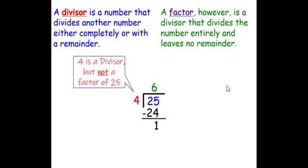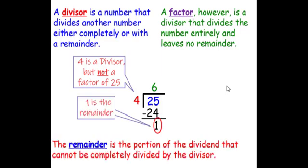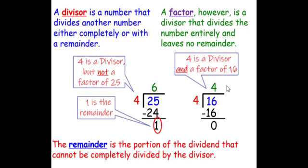A factor, however, is a divisor that divides the number entirely and leaves no remainder. 16 divided by 4 is 4 because 4 times 4 is 16. 16 minus 16 is 0. 4 is a divisor and a factor of 16 since we have no remainder.